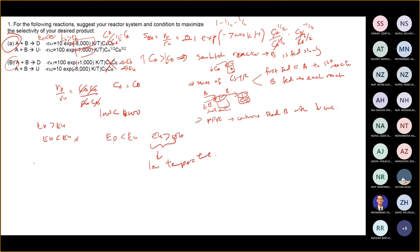So selectivity here is roughly the same as what was discussed before — which is semi-batch where A is fed to B, and so on. Mostly you need to show which one is favorable for low temperature.